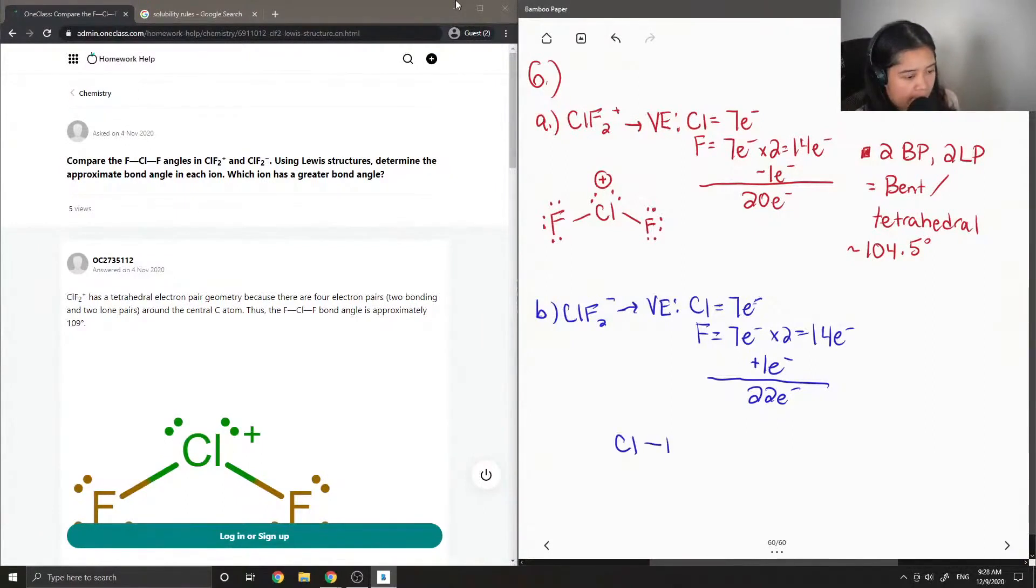Now if we draw out the structure, we have the two bonds to the fluorines. I am again going to draw all the lone pairs on the terminal atoms. And then if I count this out, I have one, two, three, four, five, six, so 12, 13, 14, 15, 16 electrons. So now I need 22 in total, so I need to draw down six more, and we put them all on the chlorine.